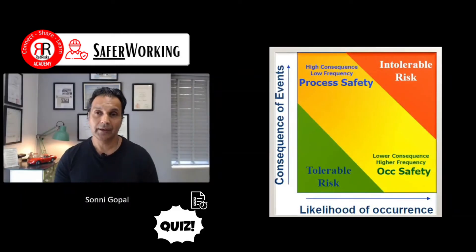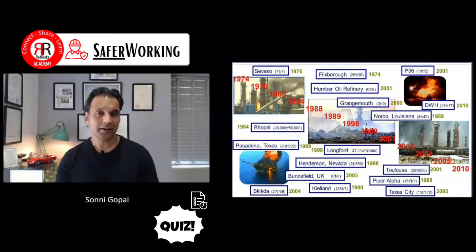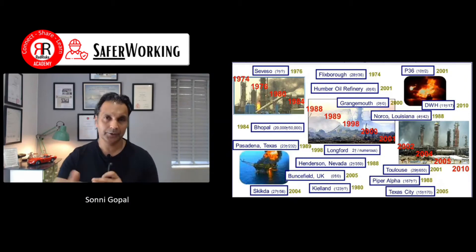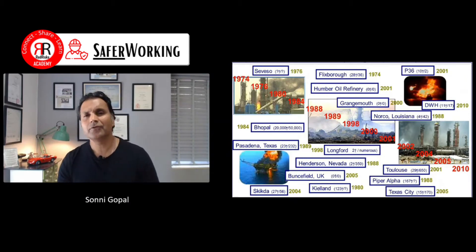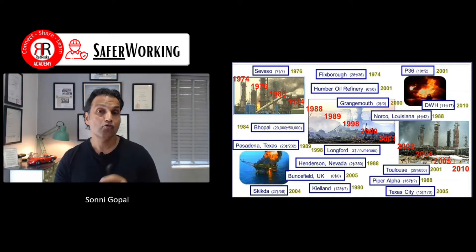In this graph, you can see a similar shading of colors from green to red. You could consider process safety and occupational safety relative to consequences and frequencies. This graphic shows what we want to try and avoid. From 1974 to 2010 — and there have been others since — there's been a range of catastrophic events. We really do need to make sure we're managing those risks as low as reasonably practicable, relative to guidelines, codes, and standards.